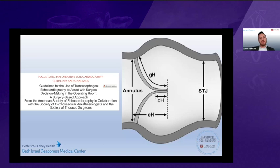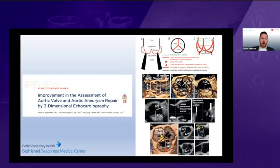When we talk about geometric indices, we will often measure the effective height, the coaptation height, the geometric length, as well as annular measurements. Dr. Schaefer has co-authored an excellent review article on how 3D echo is utilized to measure all of these geometric indices, and I would advise people to read it afterwards.